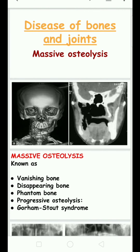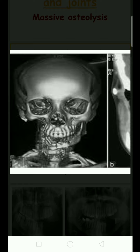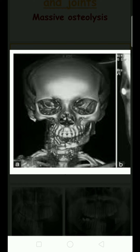Today we discuss the topic of massive osteolysis in diseases of bones and joints. Massive osteolysis is otherwise known as vanishing bone, disappearing bone, phantom bone, progressive osteolysis, or Gorham-Stout syndrome. In these cases, massive osteolysis — particularly in the jaw — involves massive osteoclastic activity in a particular area.